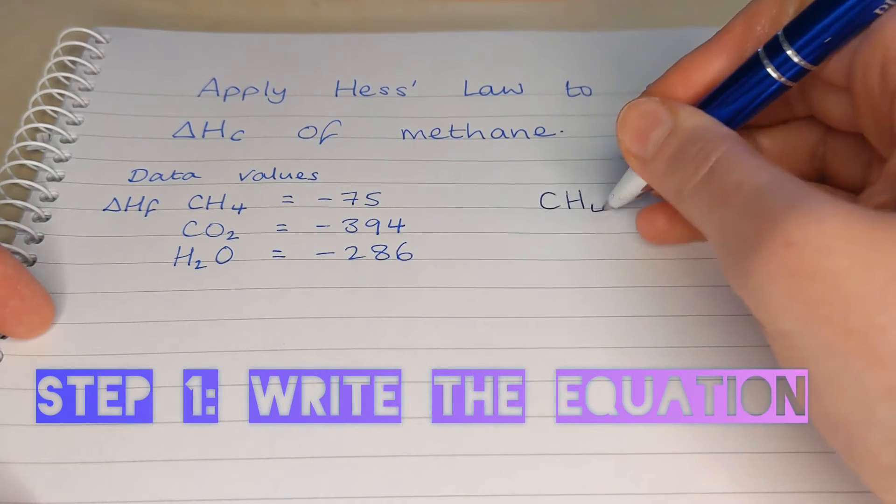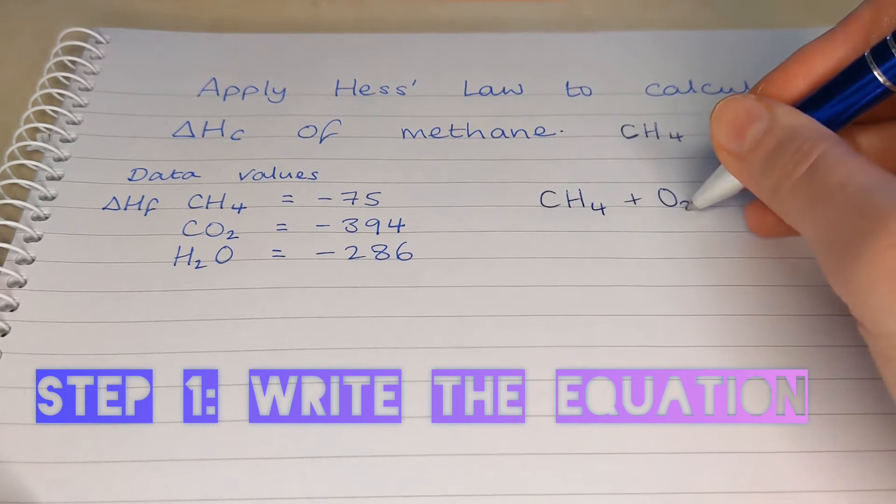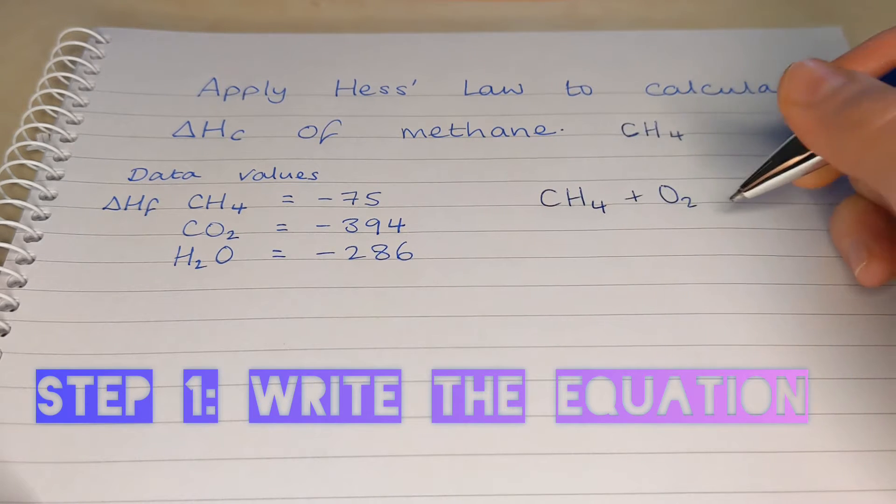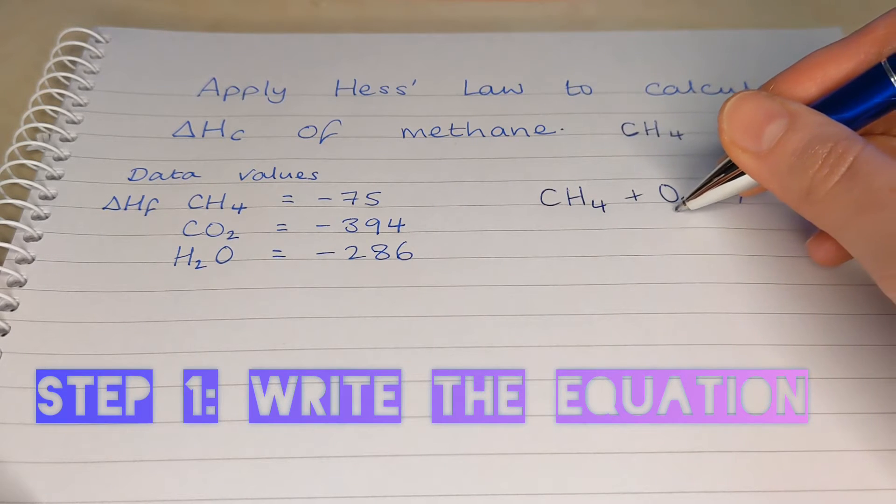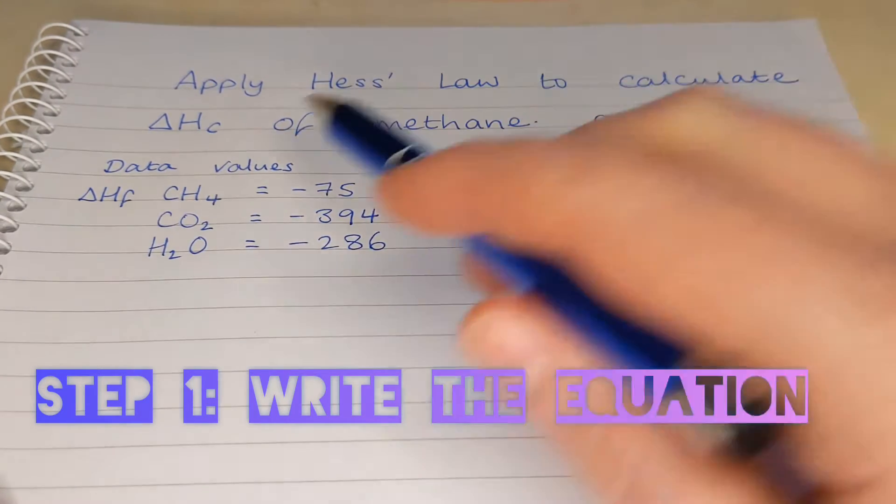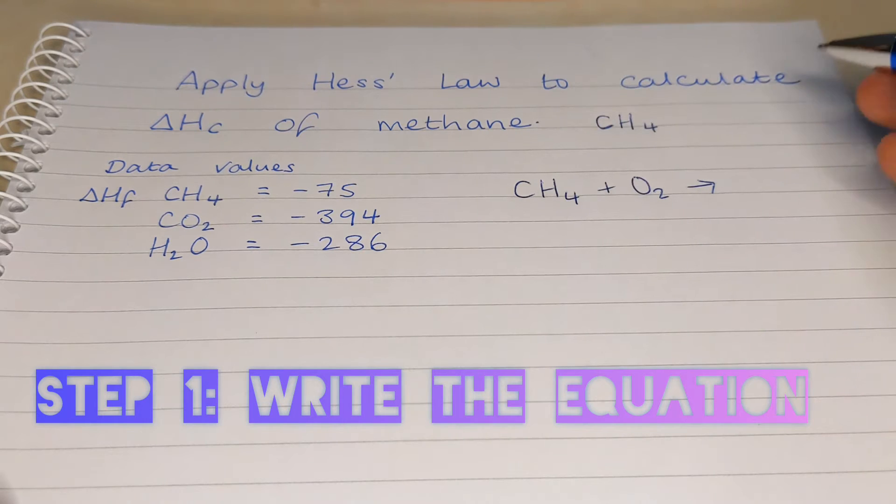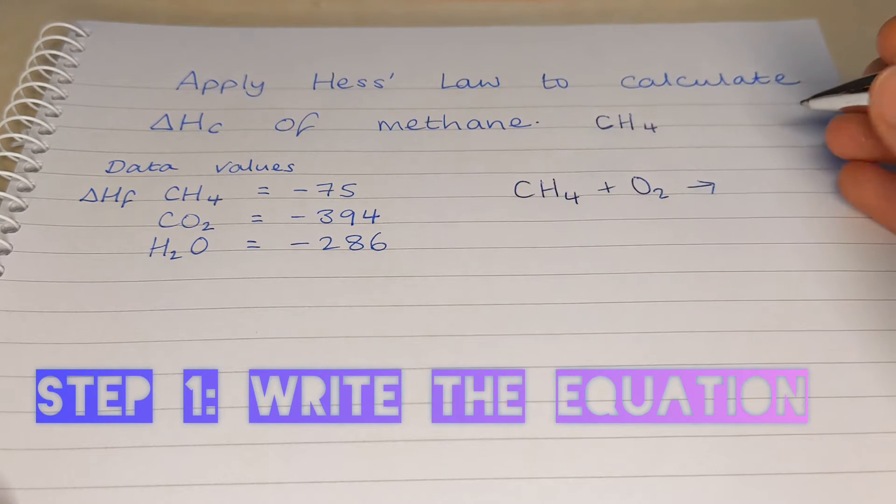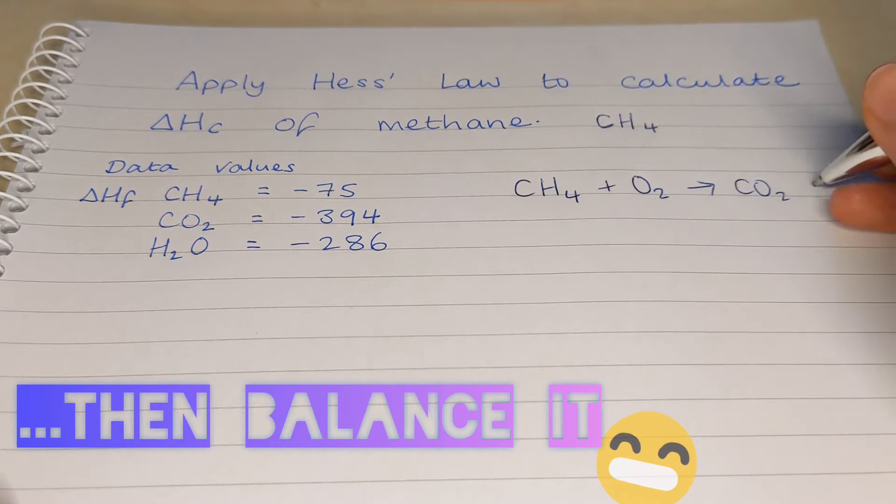Combustion just means burning and we burn things in oxygen and oxygen is O2. Oxygen goes round in twos. So methane plus oxygen, we're going to assume it's complete combustion because that is what the definition for enthalpy of combustion says. So combustion products, complete combustion products for a hydrocarbon are carbon dioxide and water.